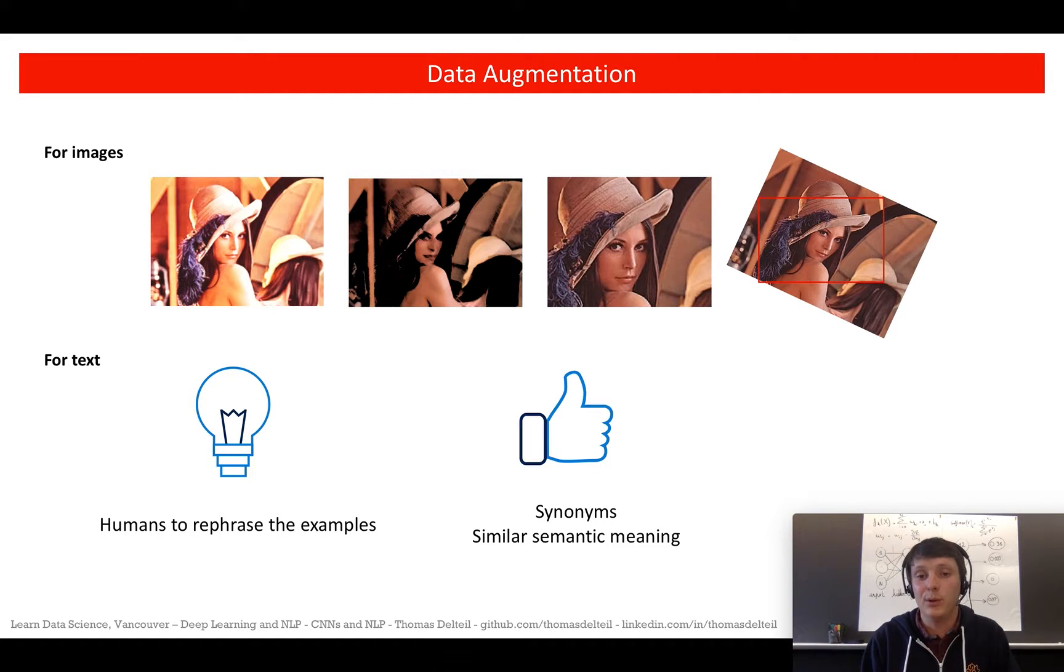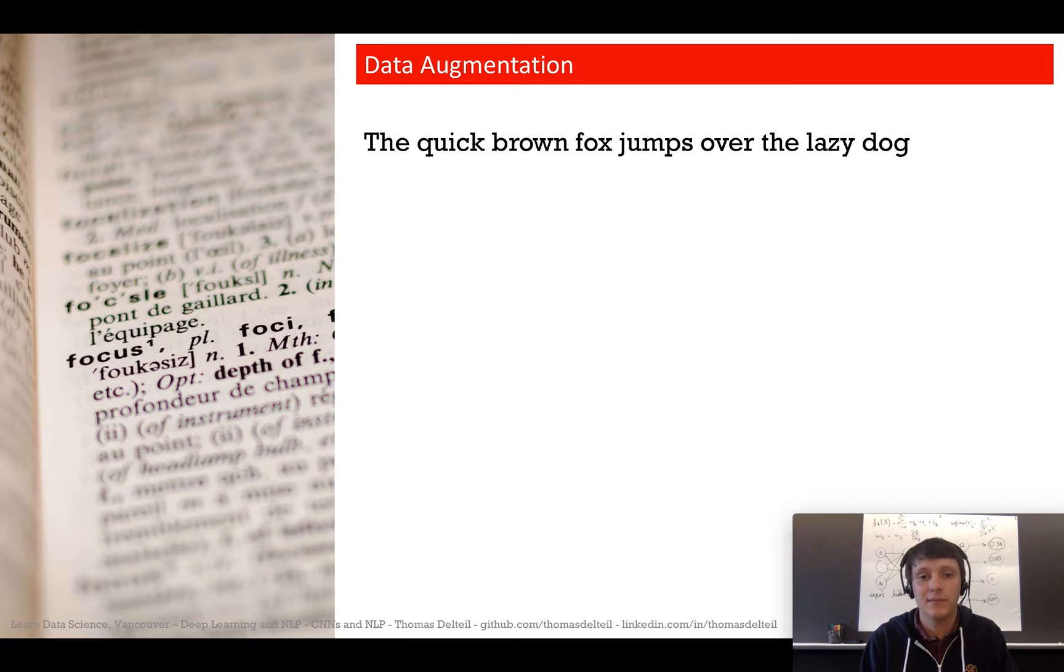For example, we have the sentence 'the quick brown fox jumps over the lazy dog,' which contains all the letters of the alphabet.